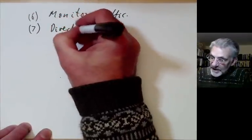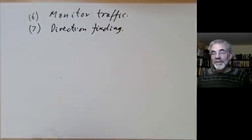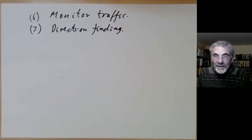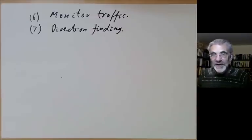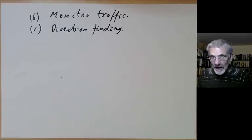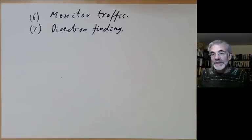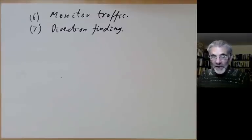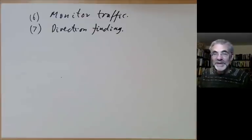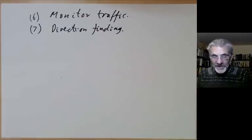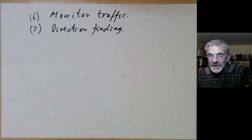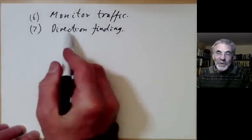Another technique is direction finding. If Alice is on a ship sending messages, Eve might not decode the message but can tell where it's coming from. During the Second World War, the Japanese maintained radio silence before attacking Pearl Harbor, giving the Americans no warning. They also moved radio operators between ships, because the Americans could identify individual operators by their distinctive Morse code rhythms — known as the operator's fist. This made the Americans think ships were somewhere they weren't.